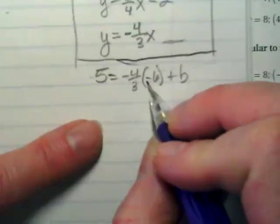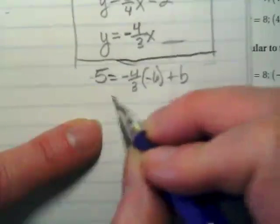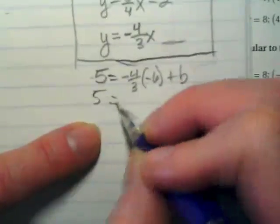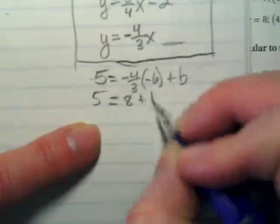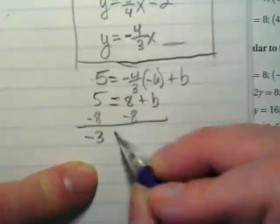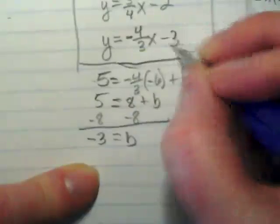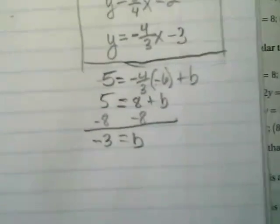Negative 4 times negative 6 is positive 24. Divided by 3 gives me 8. So I have 5 equals 8 plus b. If I subtract that 8, I get negative 3 equals b. And now I can go back to my answer space and subtract the 3.